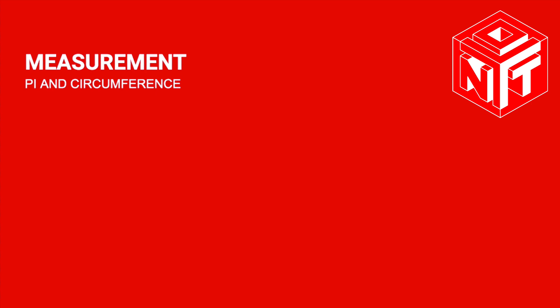Pi in circumference. So circumference is just another word for the perimeter around a circle, so it's just the edge all the way around it.